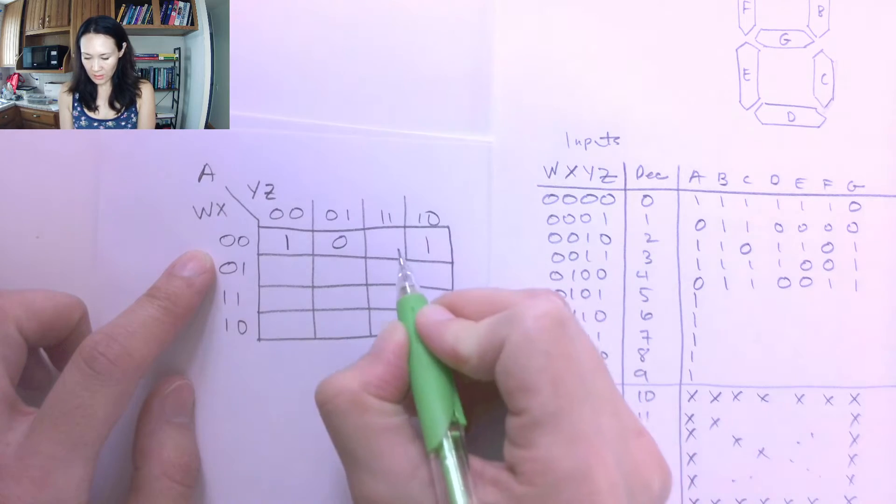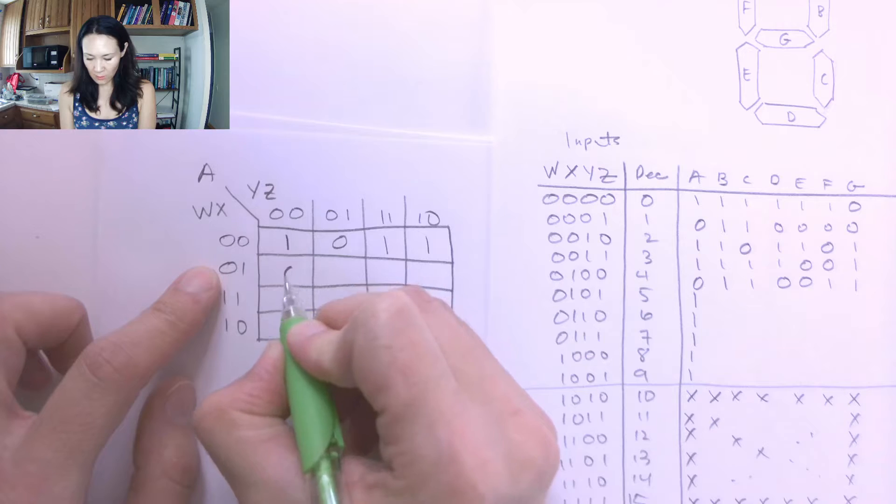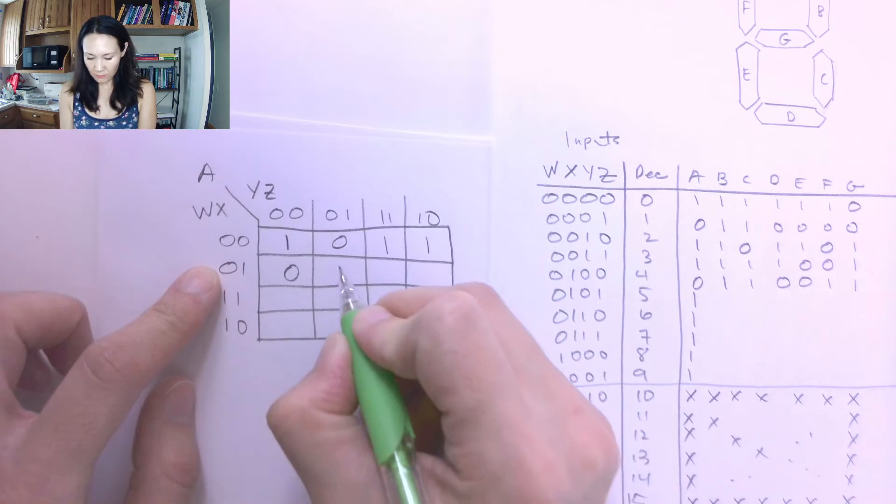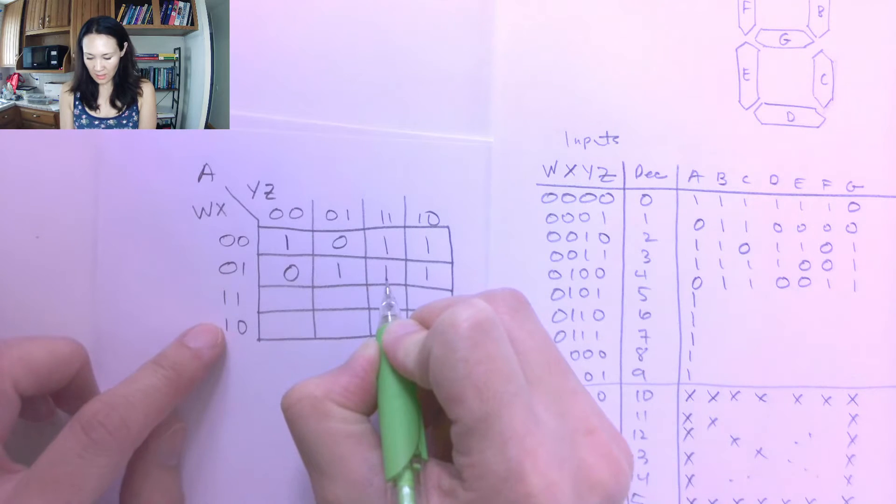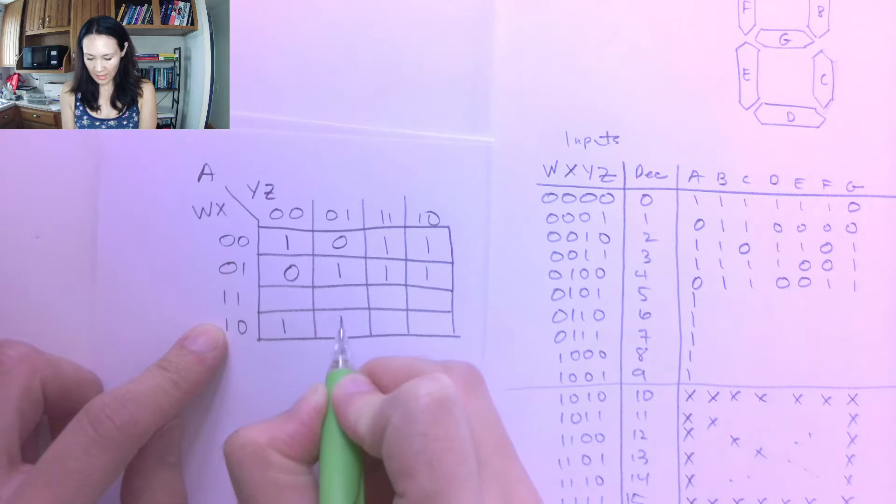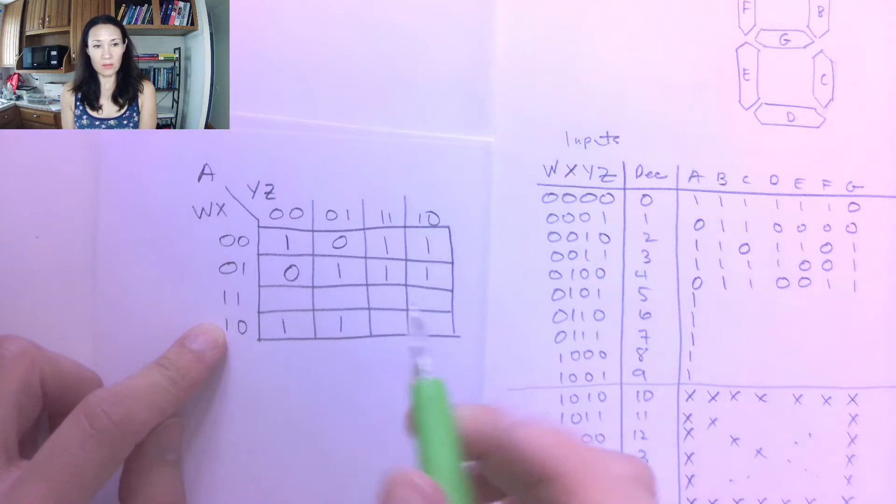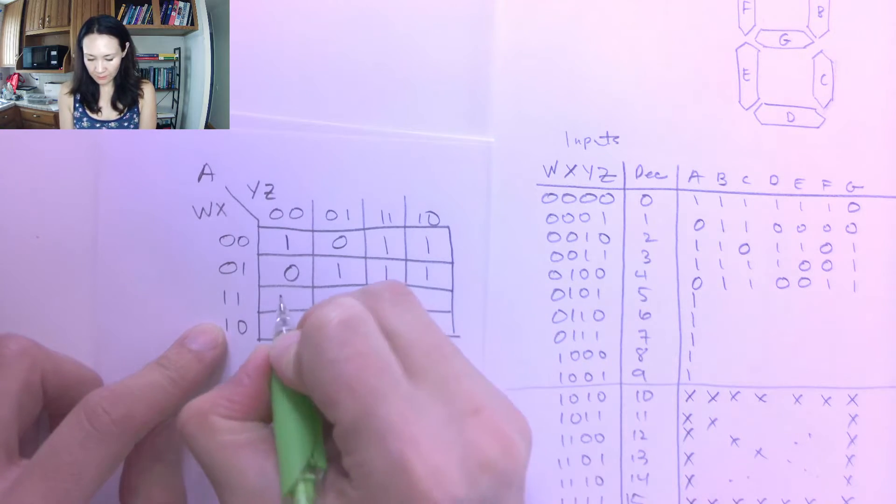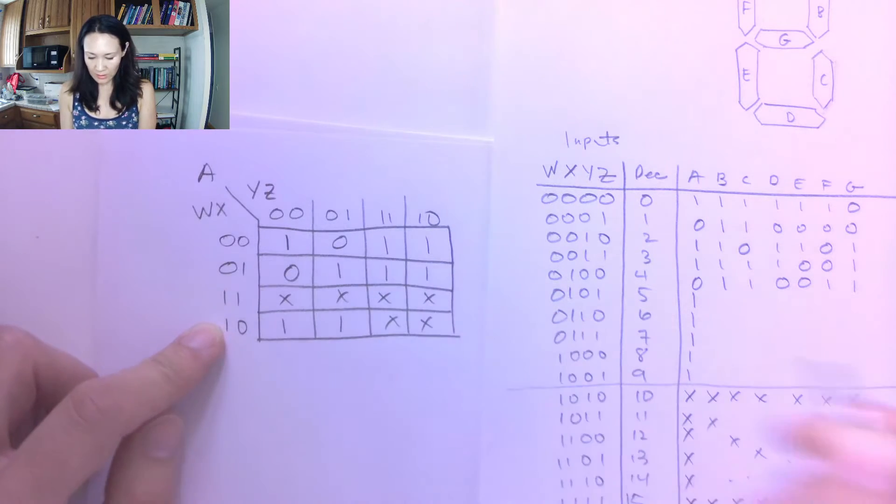And then at 2, I have 1. And at 3, I have 1. Then at 4, I have 0. And at 5, I have 1. 6 is 1, 7 is 1. And then for 8, I have 1. And for 9, I have 1. And now I'm all out of 0s and 1s, and I'm entering down into the don't cares. So it means everywhere else on this Karnaugh map, these are don't cares. X, X, X, X, X, X for my don't cares.